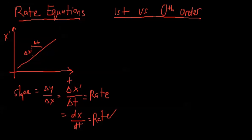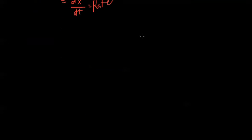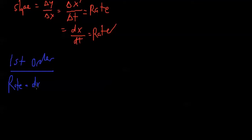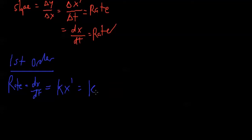So how does this apply to first order and zero order reactions? For first order, rate, or dx over dt, is equal to k times x to the n. So what is n here? n is pretty much 1, because it's first order. So you can replace this as 1, and this pretty much becomes kx. So the rate of first order reactions is kx.